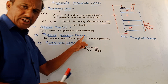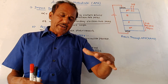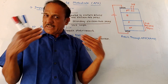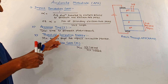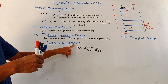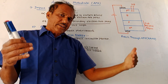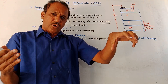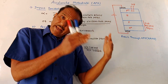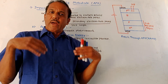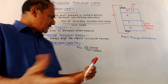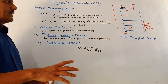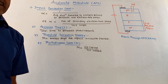Next is the threshold ionization energy. As the name indicates, there is a certain threshold level — a certain minimum amount of energy is required to cause this multiplication process. Last parameter is the multiplication coefficient. Whenever light falls on such structures, photo currents are generated, but in APD, due to impact ionization or the avalanche process, multiplication of charge carriers takes place. So the multiplication coefficient is the ratio of output current to the input photo current.